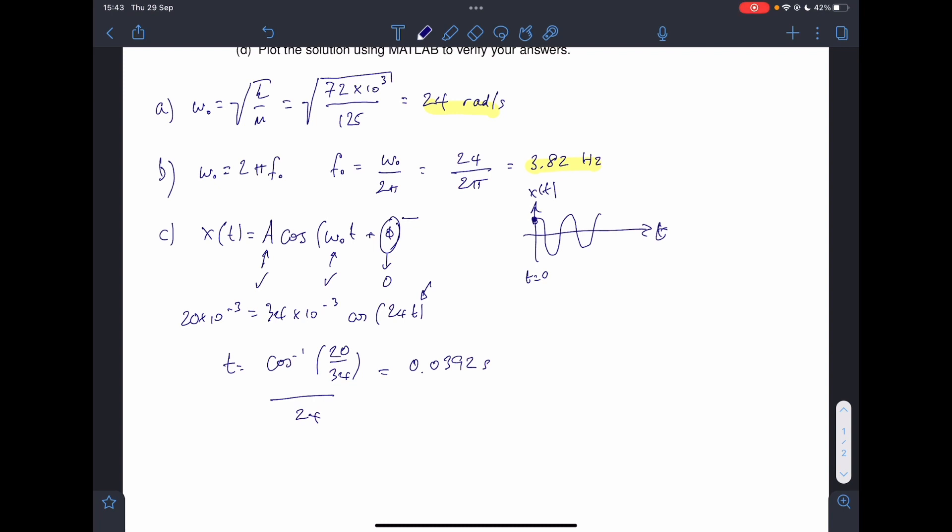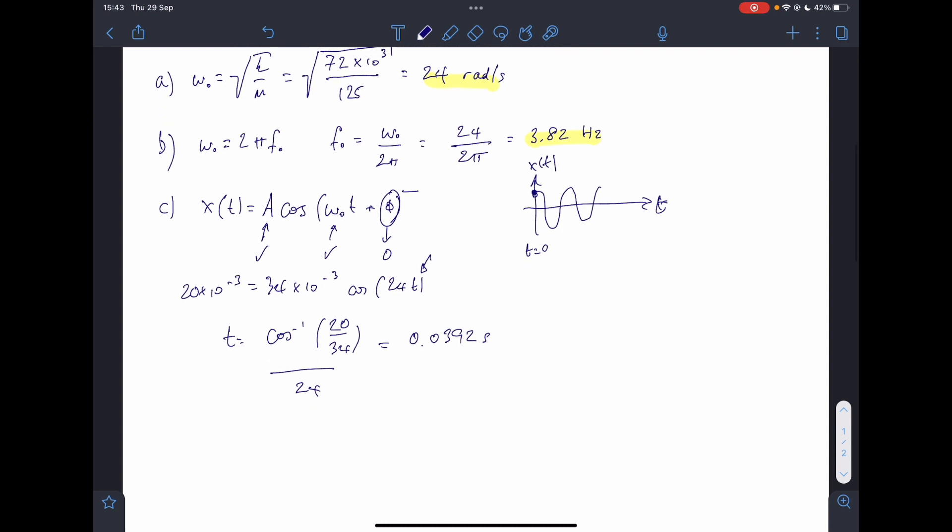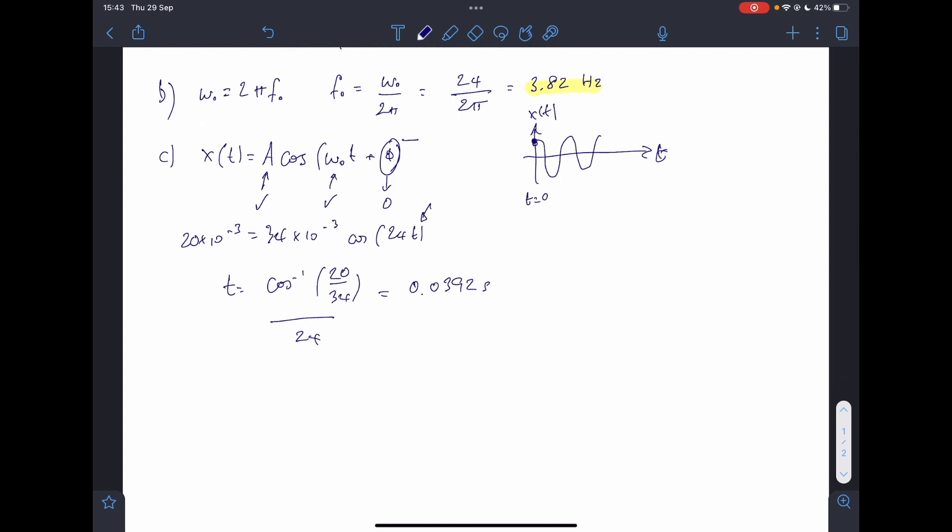So then I need to, I've got my time, so I now need to find my velocity. So I have to take the derivative of that equation. My amplitude stays there. Cosine turns into minus sine. I've got my omega nought t, but I need to apply the chain rule, which is, so I need to take the omega nought out as well. There's one, there's my equation. Velocity, displacement.